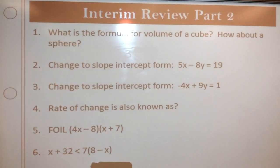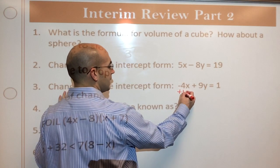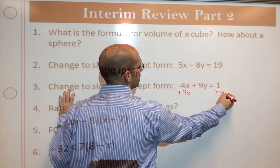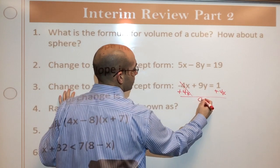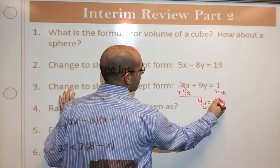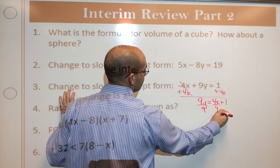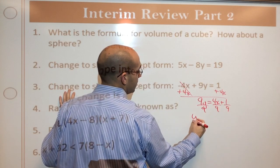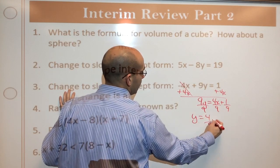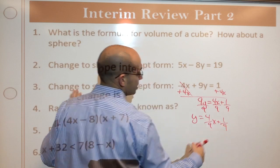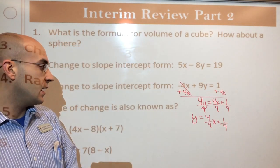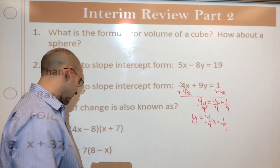Let me come back up to here for slope intercept form. Add 4x to both sides. 9y drops down equals 4x plus 1. Divide by 9 everywhere. And I'm left with y equals 4 over 9x plus 1 over 9. So the slope of that line is 4 ninths and the y intercept is 1 ninth.